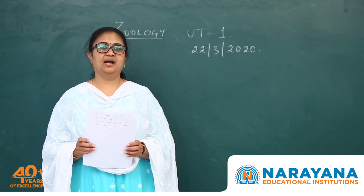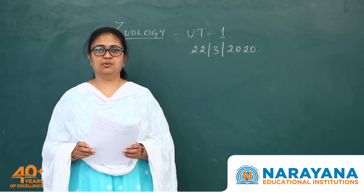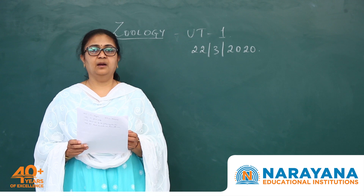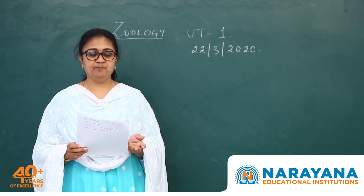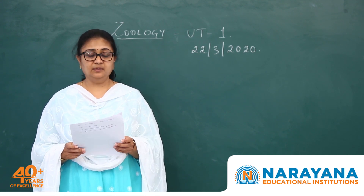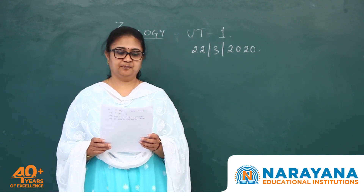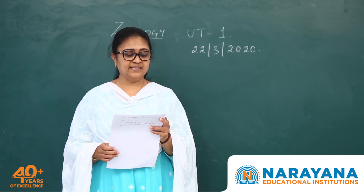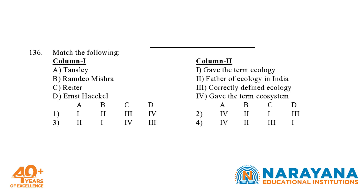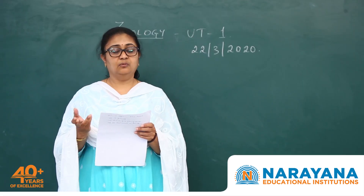Hello students, I am here to discuss the question paper dated 22nd March 2020. This is for unit test 1 and the subject is zoology. Let us start with question number 136. It's a match-the-following type of question where in column 1 they have given us scientist names and in column 2 what they are related with.